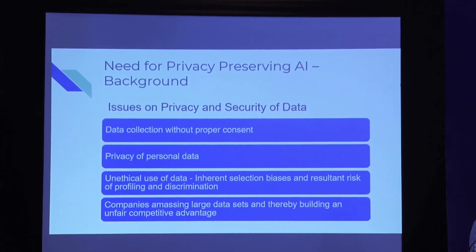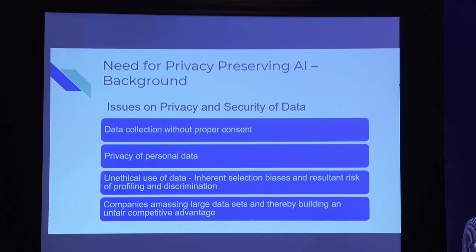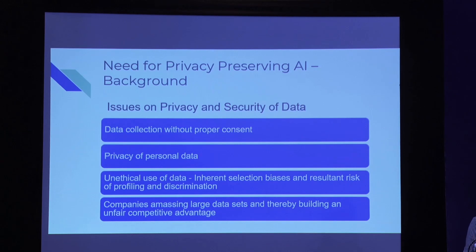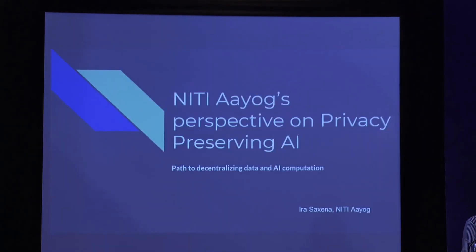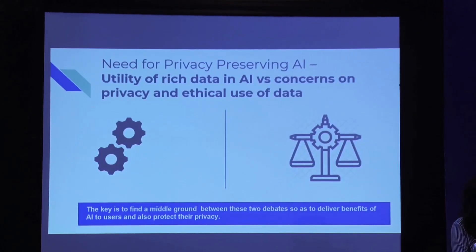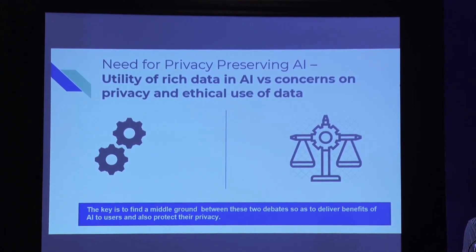Establishing the case for privacy-preserving AI: the issues on privacy and security of data are centered on data collection without consent, privacy of personal data, unethical use of data, companies acquiring large data sets and gaining an unfair advantage — which leads us to the debate on utility of rich data and artificial intelligence versus concerns on privacy and ethical use of data.